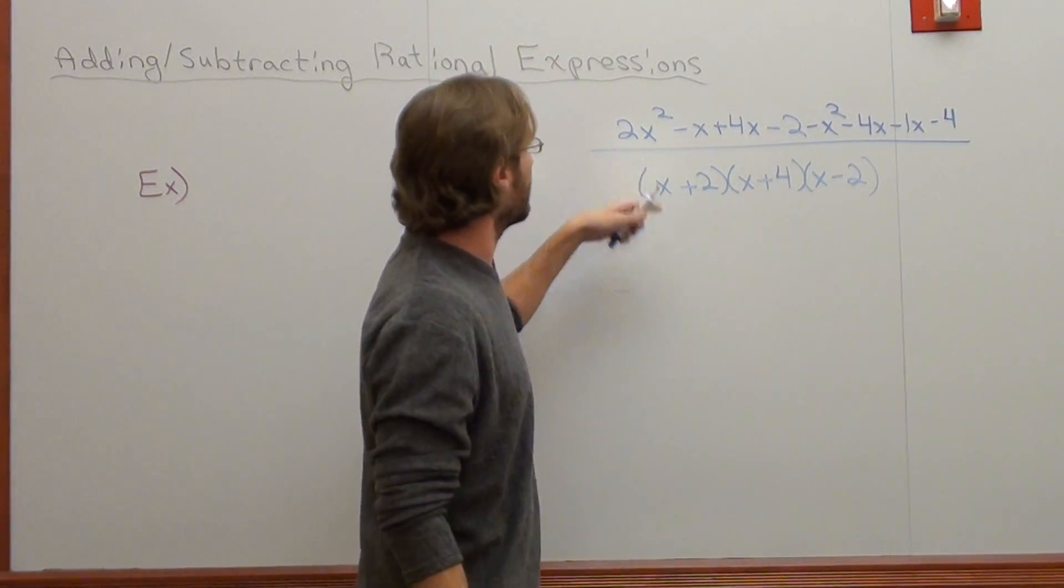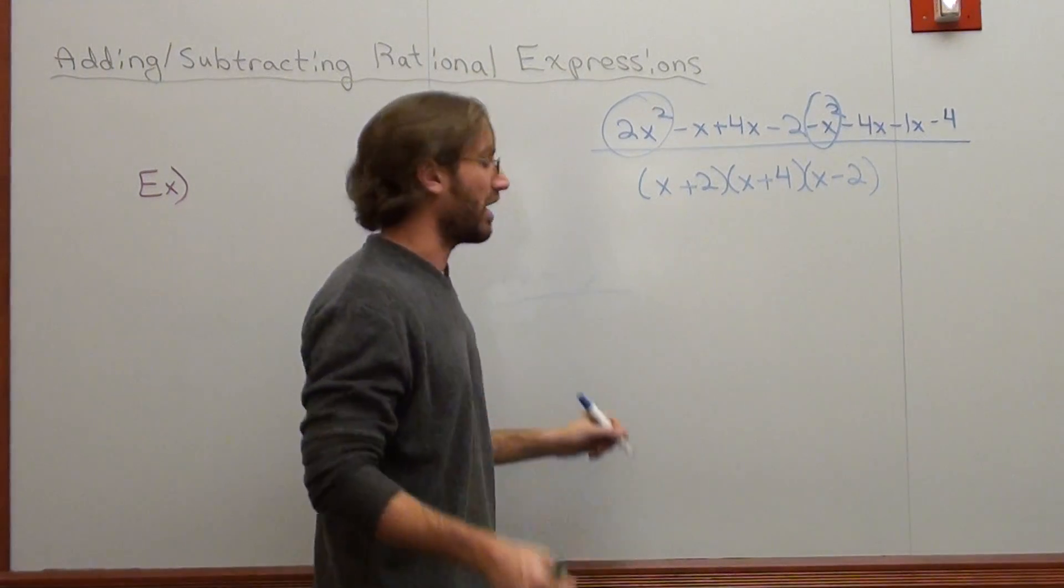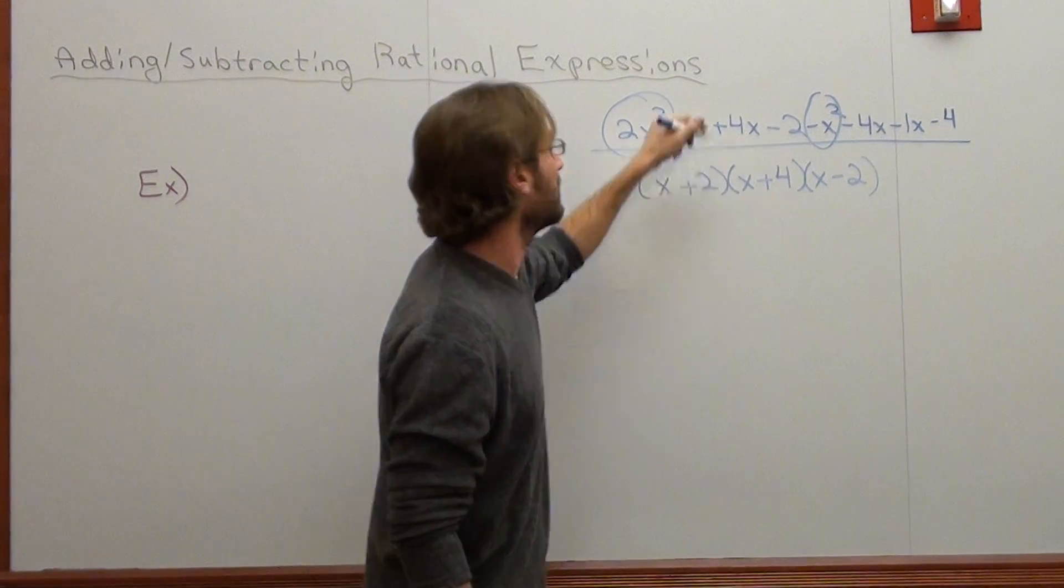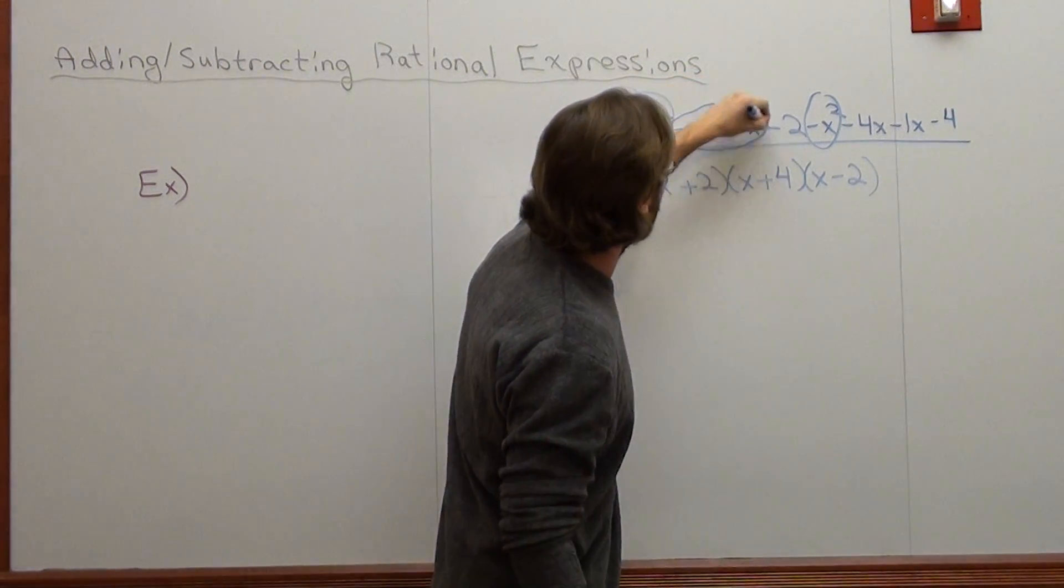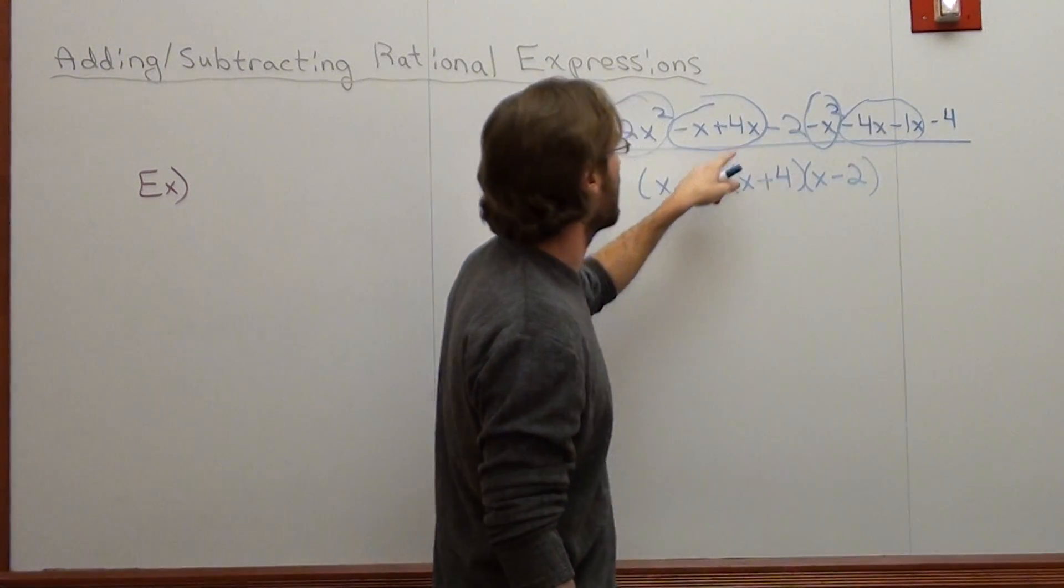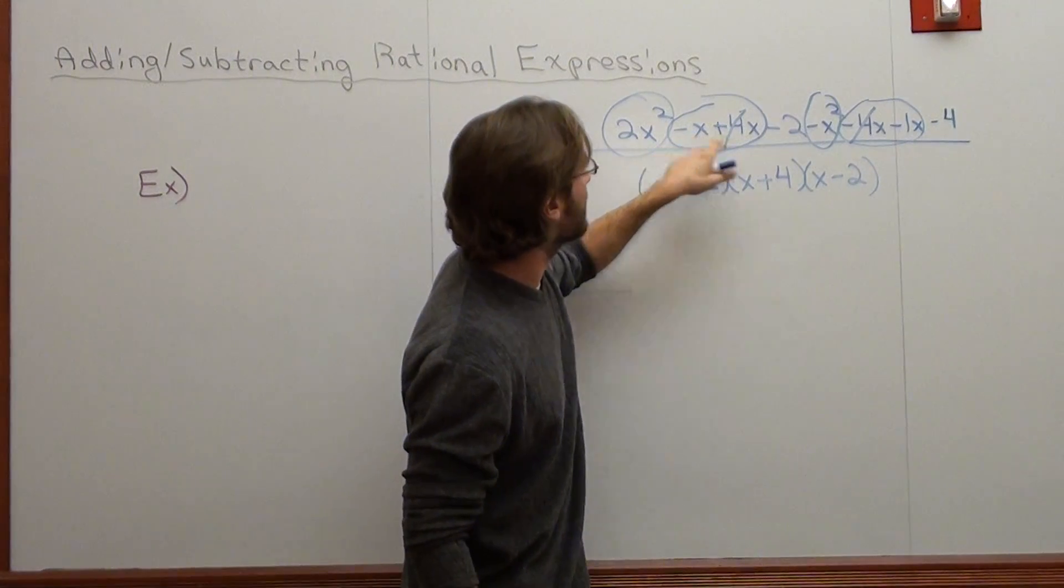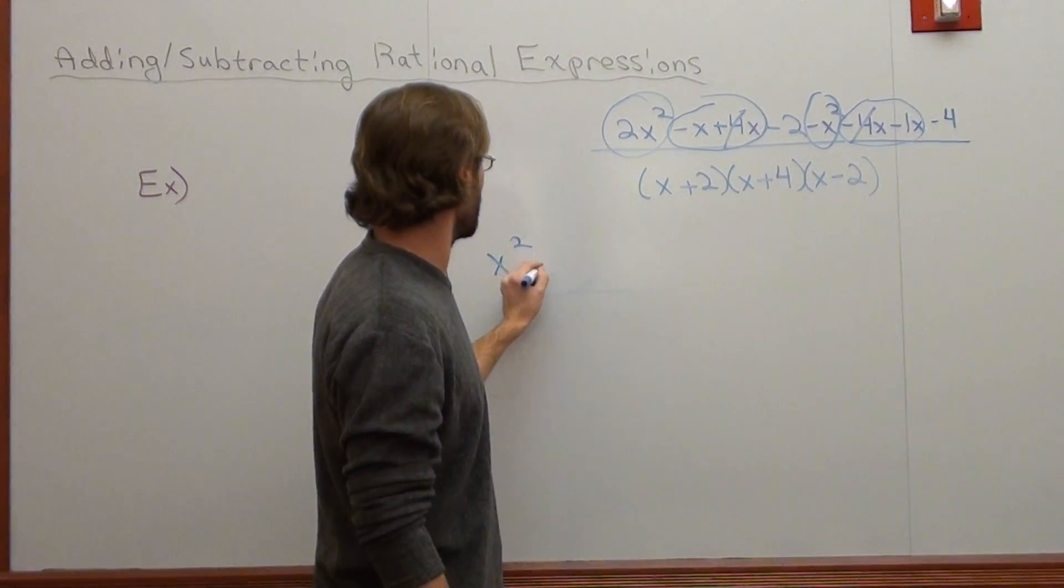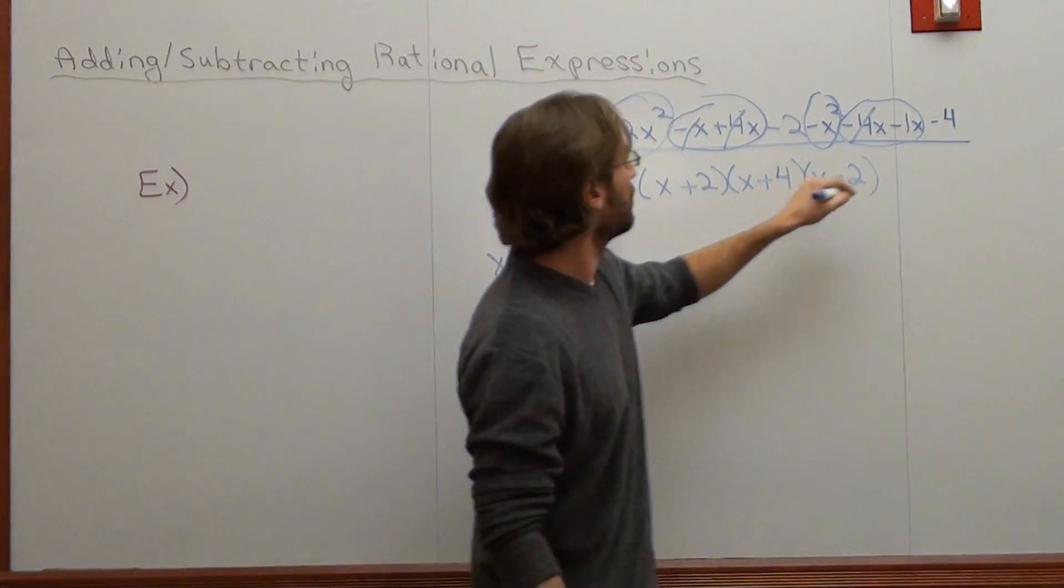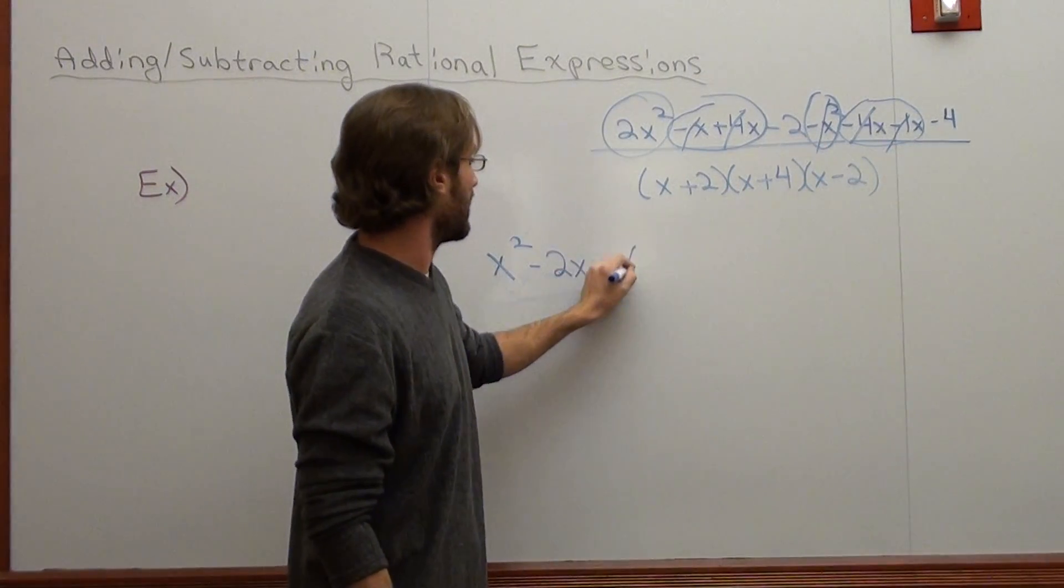So 2x squared subtracting x squared is x squared. Negative x plus 4x minus 4x minus 1x all at the same time. 4x and negative 4x cancel. Negative x, negative x again, or negative 1x is negative 2x.